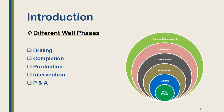Any well in oil and gas goes through five phases: drilling, completion, production, intervention, and plug and abandonment. These are the different well phases for any well in the oil and gas field.